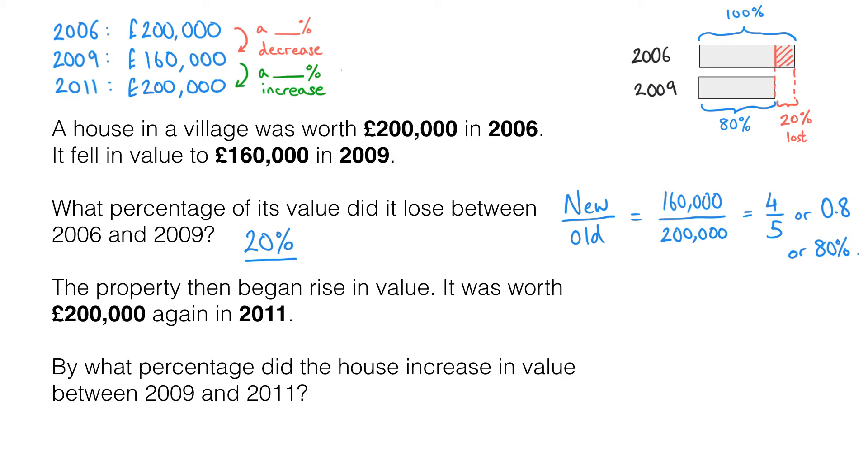We can check this quickly by working out 20% of 200,000. Well 10% of 200,000 is just £20,000. So 20% would be £40,000. And let's just check. Has it lost £40,000? Yes it has. So 20% is correct. Going back up to our notes here in the top I just want to note that 20% decrease here.